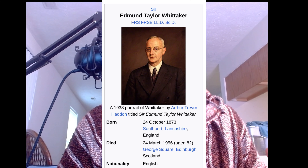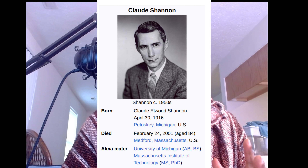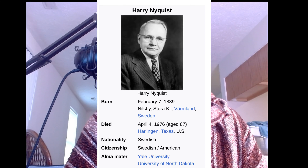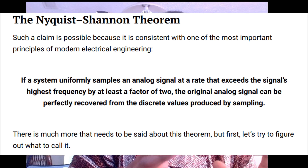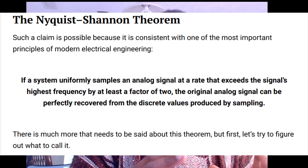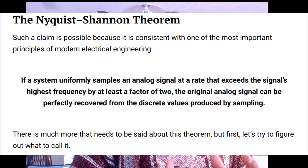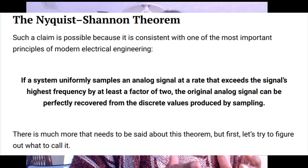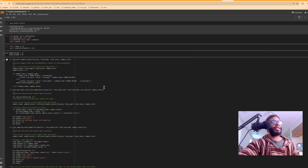A quick background: the theorem was originally published by E.T. Whitaker in 1915, proven by Claude Shannon as the sampling theorem, and implied by some work by Harry Nyquist in 1928. The fundamental sampling theorem — the Nyquist-Shannon theorem — claims that if a system uniformly samples an analog signal at a rate exceeding the signal's highest frequency by at least a factor of two, the original analog signal can be perfectly recovered from the discrete sampled values.